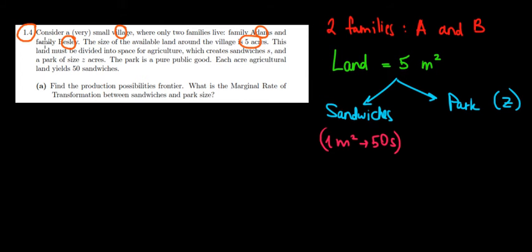This land must be divided into space for agriculture which creates sandwiches and a park of size Z. The park is a pure public good and each acre of land yields 50 sandwiches. Find the production possibilities frontier. What is the marginal rate of transformation? We have five meters square to allocate. We could do either sandwiches or we could build a park, meaning we will have sandwiches on one side.